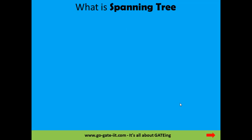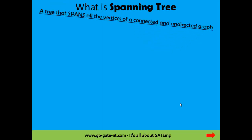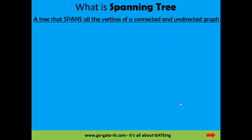Now what is a spanning tree? As the name says, a spanning tree is a tree that contains all the vertices and some of the edges of a connected and undirected graph. In layman's language, it is a tree that spans all the vertices of a connected and undirected graph.